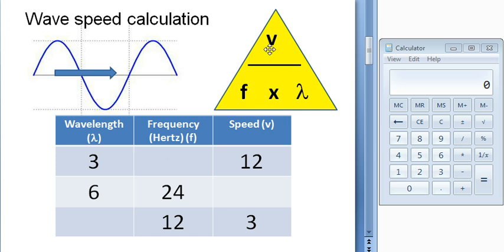In my formula triangle up here, I cover up the parameter I want to find out which is frequency, and I'm left with a calculation of speed divided by wavelength. So 12 divided by 3, and I get the answer of 4, and I can put that in.